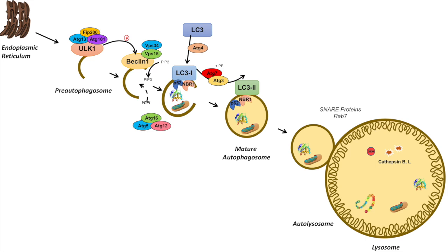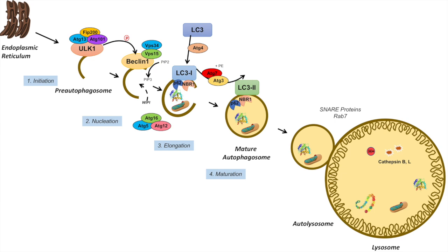Because this is a very complicated process, there have been methods to categorize each part. The first process is typically referred to as initiation. The second process, whereby PIP3 is formed, is called nucleation. As the autophagosome becomes larger through LC3-I conjugation processes, this is called elongation. Then once the autophagosomal vesicle forms and closes, this is called maturation. And the final step is fusion.